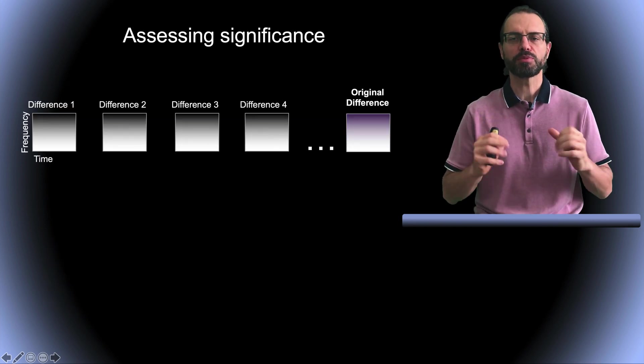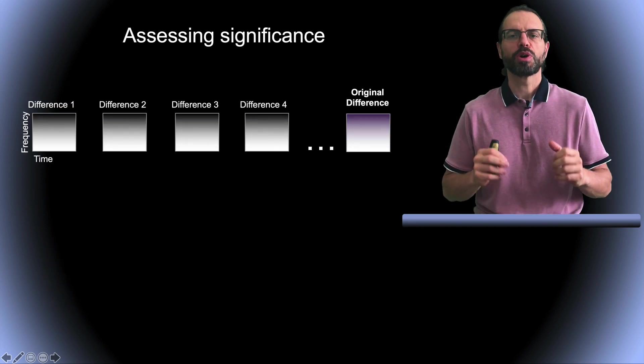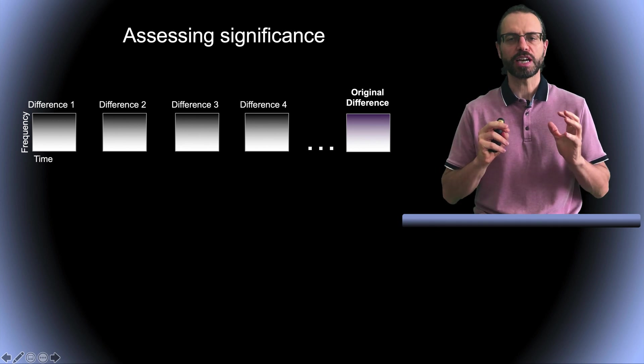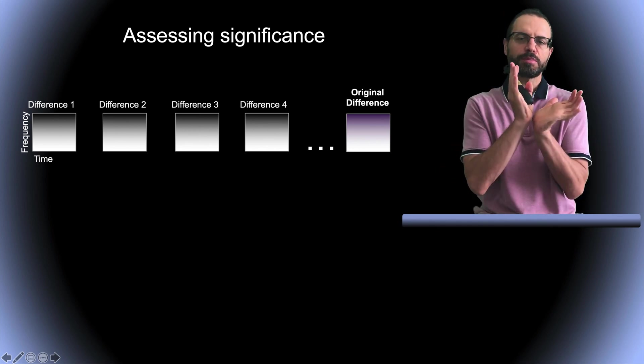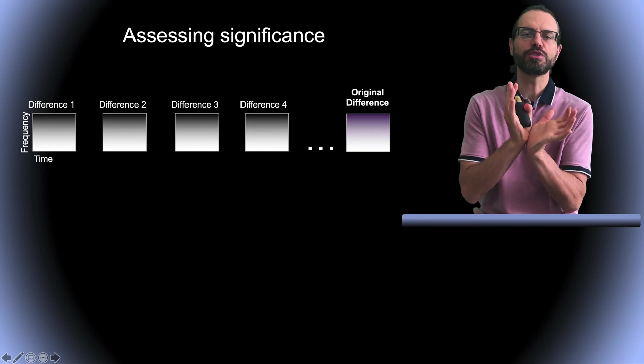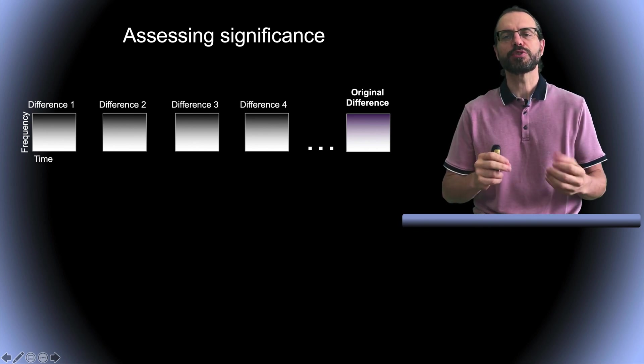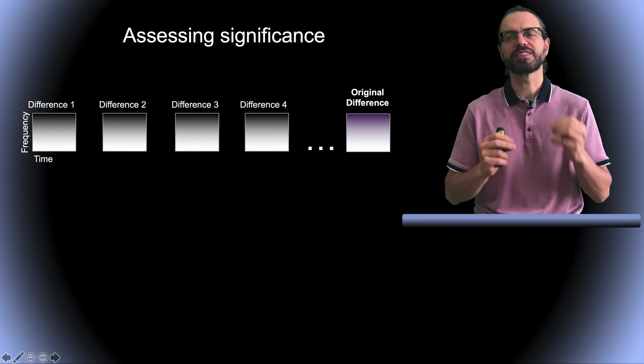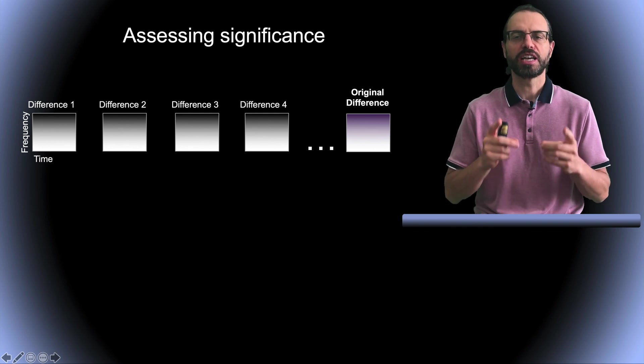So what is the problem with multiple comparisons? Well, when you calculate time-frequency decompositions in EEG, you have time by frequency arrays of values, and you need to run statistics for every single value or pixel in the time-frequency image, as shown here.